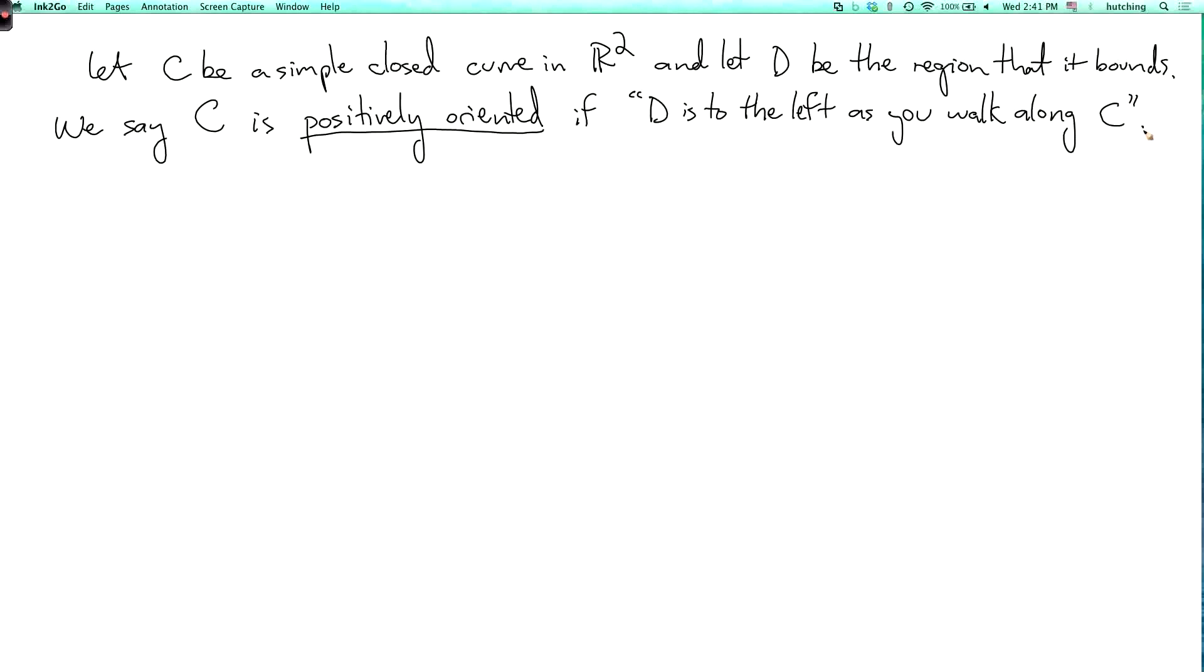So what does this mean? Oriented, what does oriented mean? If you have a simple closed curve here, orientation is a choice of a direction in which to go around the curve. We can go around it counterclockwise or clockwise.